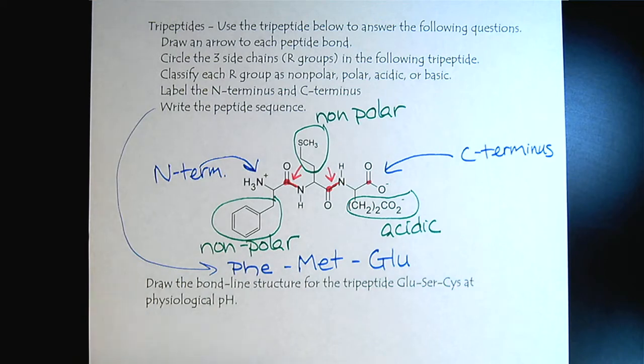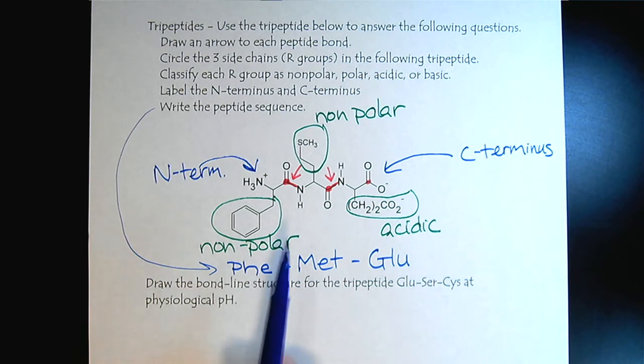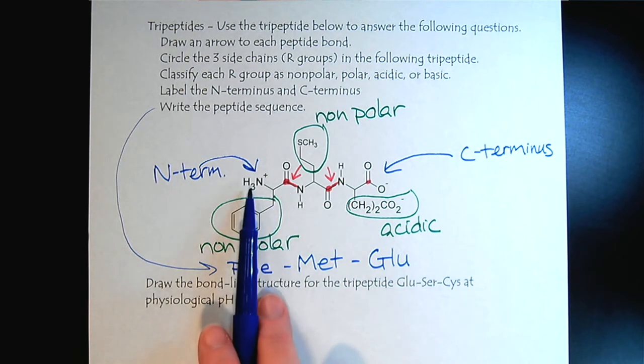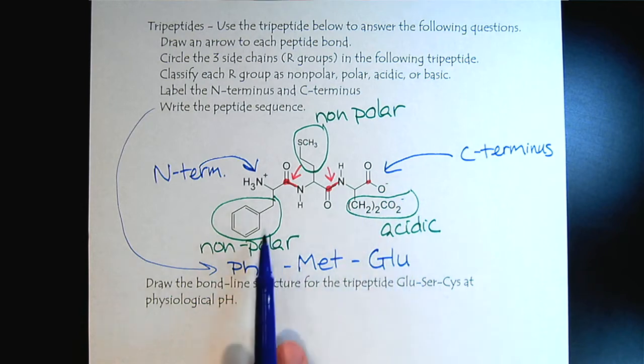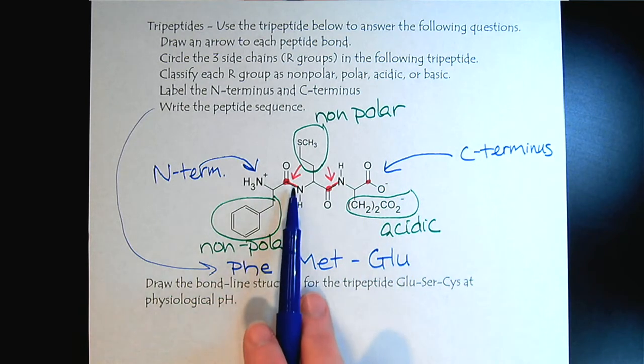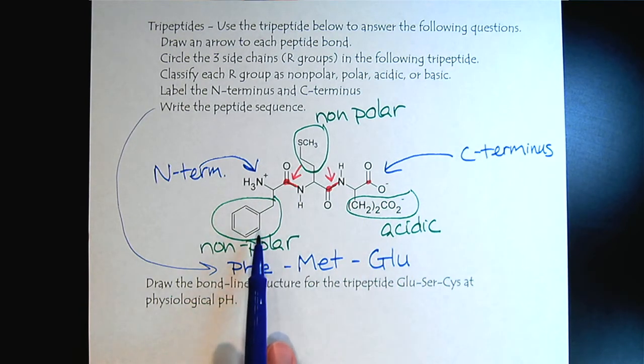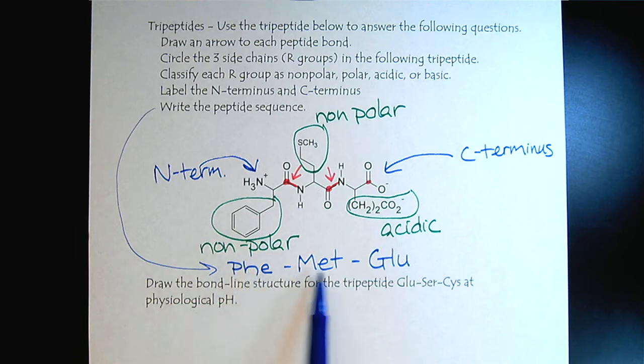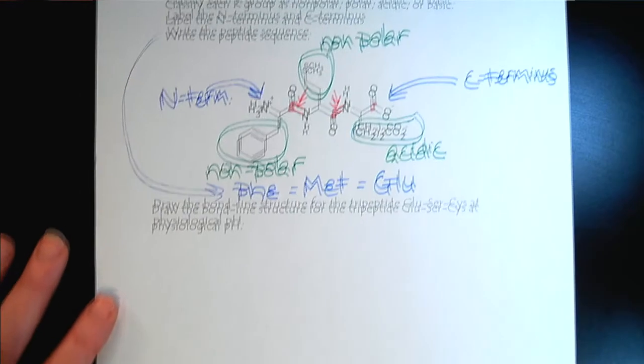This was good practice of all the skills that you would need for amino acids and their primary structure. You want to be able to recognize the N-terminus and the C-terminus, the R groups, the peptide bonds, and then use the R groups to determine the peptide sequence. Now let's have you practice that.